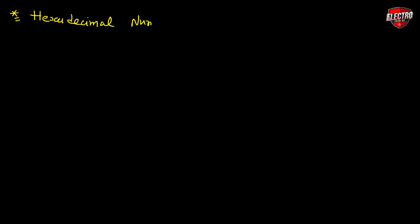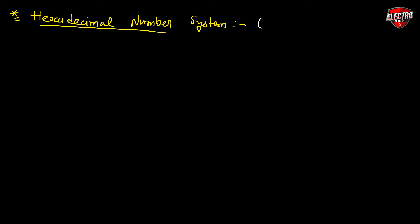Hello dear students, welcome back to the lecture series of digital electronics. In this video we will discuss the hexadecimal number system. In the hexadecimal number system we have 16 different values — that is 0 to 9 and A to F characters. These are the 16 different values.